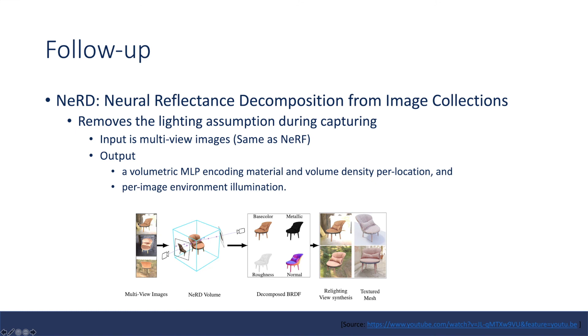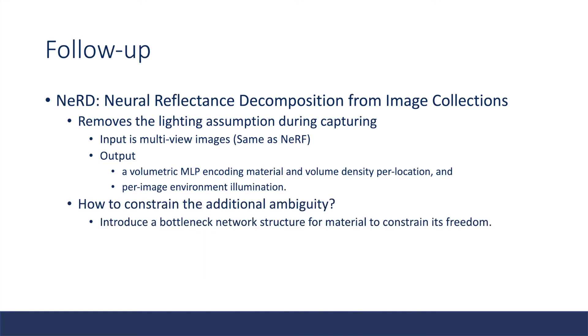There is one follow-up in this direction: the neural radiance composition paper, recently put on archive. This is a paper removing the lighting assumption during capturing. So the input is just multi-view images and it removes the constraint of the collocated camera light setup. The output is a volumetric MLP encoding material and volume density, and also estimates a per image environment illumination.